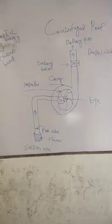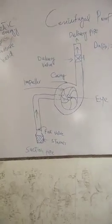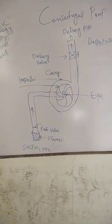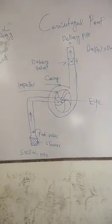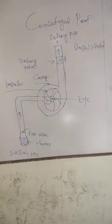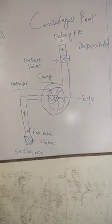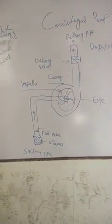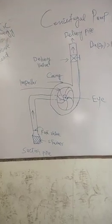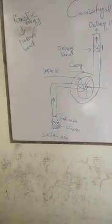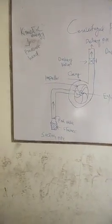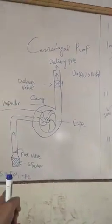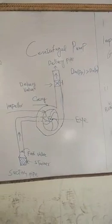What is a centrifugal pump? Generally, the work of a pump is to move water from one point to another. The basic definition of a centrifugal pump is that it converts kinetic energy into pressure. In simple words, water goes from a low level to a high level.